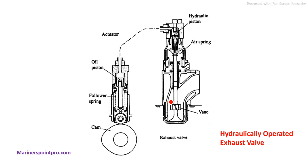Next is the hydraulically operated exhaust valve. The function is the same but instead of push rod and tappet, the cam rotates and pushes an oil piston which in turn supplies oil to the actuator. The actuator then pushes the valve spindle down and the valve opens. That is the simple working principle of the hydraulically operated exhaust valve.